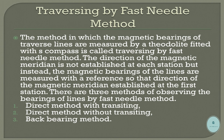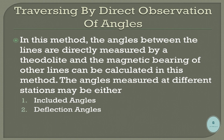Traversing by fast needle method: the method in which the magnetic bearings of traverse lines are measured by a theodolite fitted with a compass is called traversing by the fast needle method. The direction of the magnetic meridian is not established at each station; instead, the magnetic bearings of the lines are measured with reference to the direction established at the first station. There are three methods: direct method with transiting, direct method without transiting, and back bearing method.